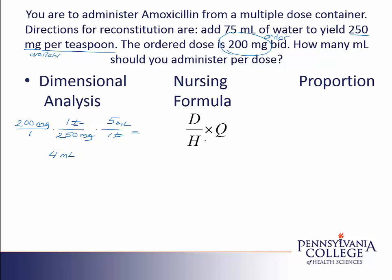If I am going to use the nursing formula, I start with the doctor's order or the desired amount, which in this case is 200 milligrams. I divide by what I have on hand, which is 250 milligrams. The labels for these two must match and cancel, which they do. The 250 milligrams is in a quantity of one teaspoon. However, I don't want my answer to have a label of teaspoons, so I'm going to change the teaspoons into milliliters — one teaspoon is the same as 5 milliliters. So 200 divided by 250 times 5 gives my answer of 4 milliliters.